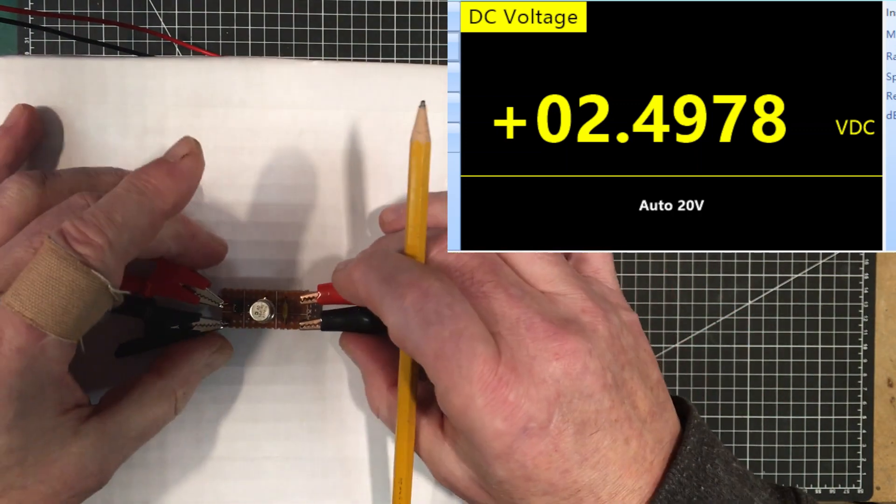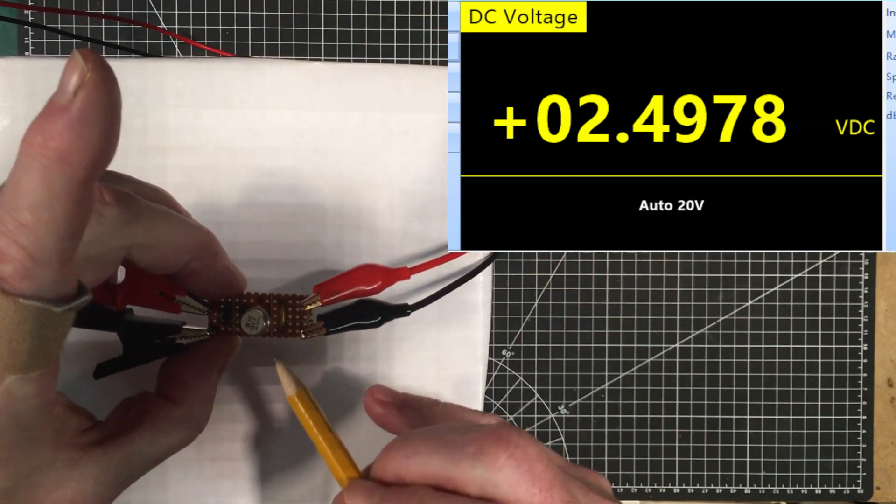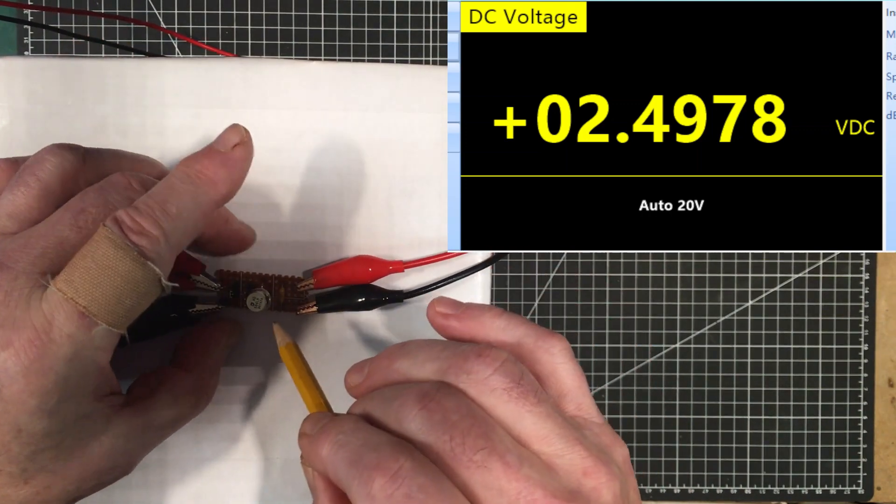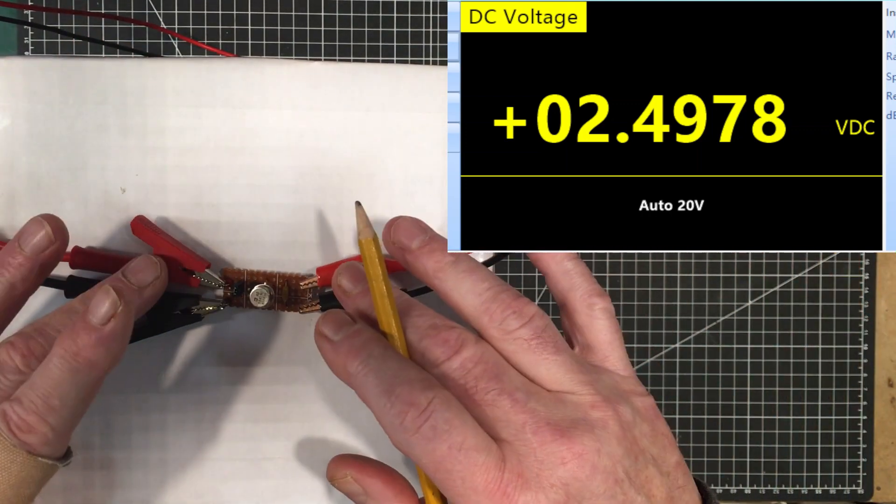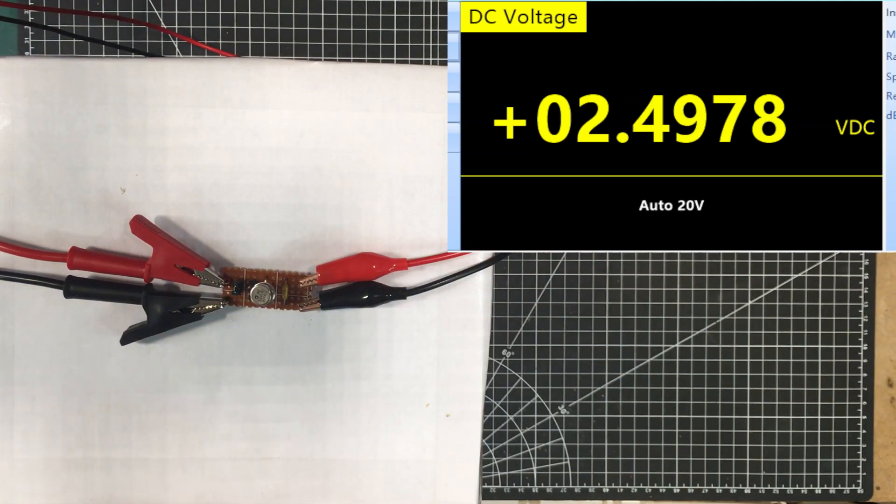So this is the AD584L. Now I see on the end of that number there, I don't know if you can see it or not, but there's a little H on the end of it and that just means it's the tin can version. There's also the P-DIP as well, but I like this version better.